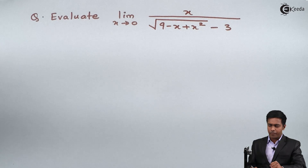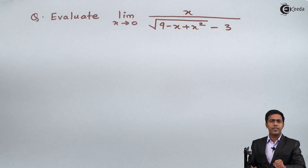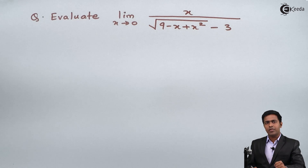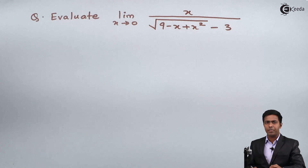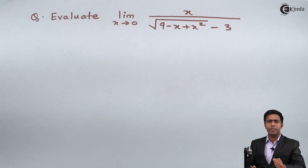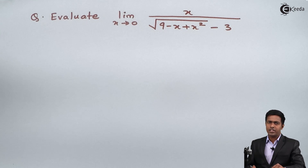Whenever we have an algebraic function in a limit, we start with the direct method. If the direct method gives us the value 0 upon 0 — that is the indeterminate form — then we say the direct method fails and we look for some other method. So first of all, I will start with the direct method.